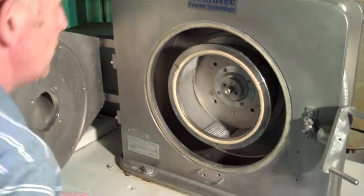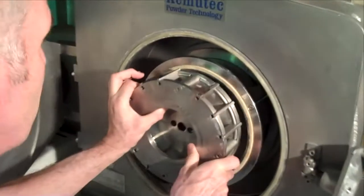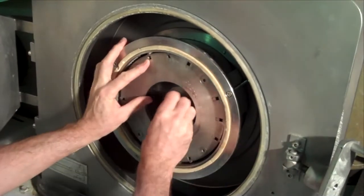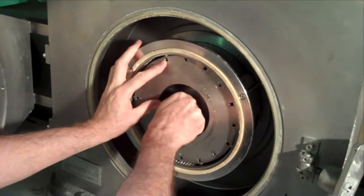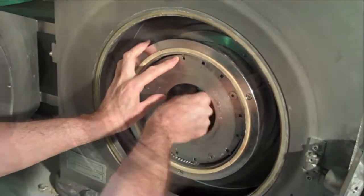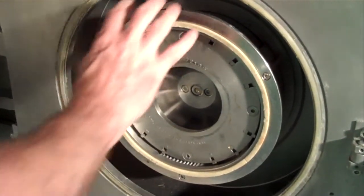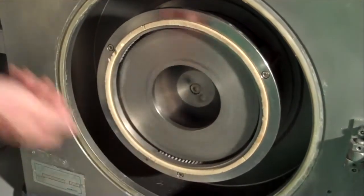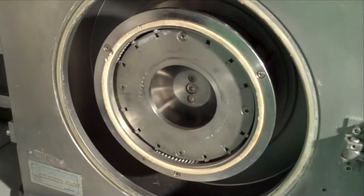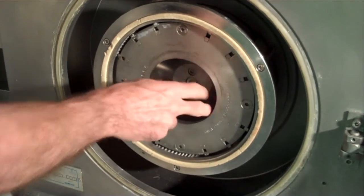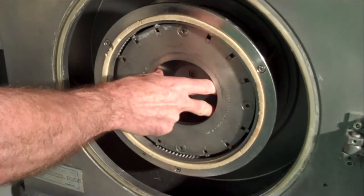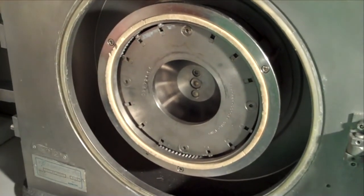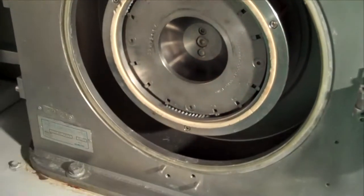It is then located with screws. The finished assembly operates with the fixed outer screen with the cutter blocks and the internal rotating turbine. Product enters into the eye of the mill through this hole from the inlet on the door, is ground, passes out past the screen assembly, and discharges below into the collection system.